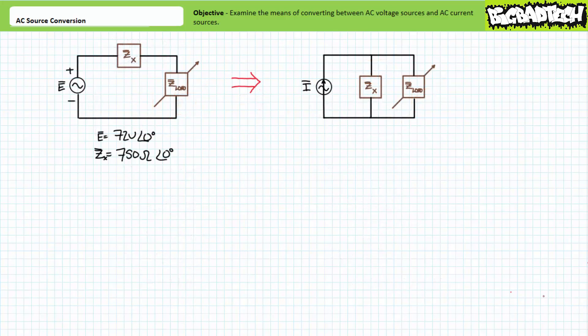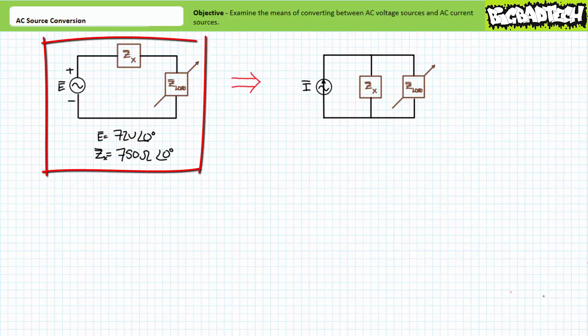Let's try the reverse operation and learn to convert an AC voltage source in series with a fixed impedance to an equivalent AC current source in parallel with a fixed impedance. Consider a 72 volt at an angle of 0 degree voltage source in series with a 750 ohm at an angle of 0 degree fixed impedance in series with a variable load impedance.